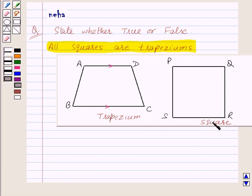Now in a square we know that the opposite sides are parallel, i.e. PQ is parallel to SR and PS is parallel to QR. That means both pairs of opposite sides are parallel.